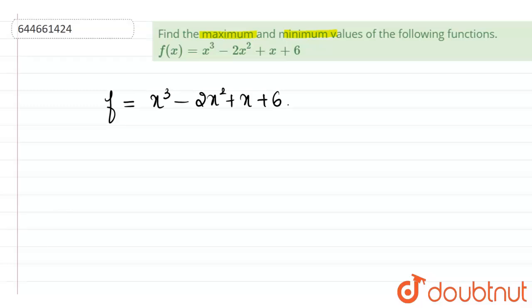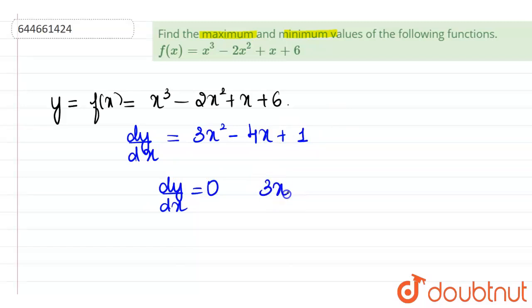So this function f of x, whatever is given to us, let's call it as some y. And then, to find out the maximum minimum values, first we have to equate the first differentiation to 0. So let's find dy by dx. dy by dx of x cubed will be equal to 3x squared minus 2 into 2 will be 4x plus 1. So first we have to equate dy by dx is equal to 0. So if dy by dx is equal to 0, that means 3x squared minus 4x plus 1 is equal to 0.